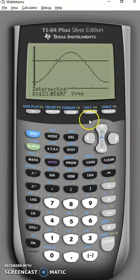First intersection where x equals 123.8 or about 124 days, and then we can get the second one.